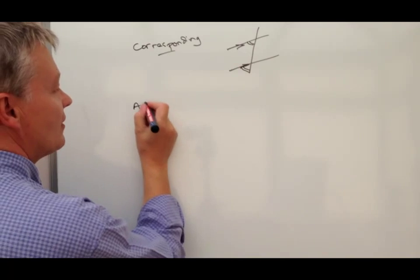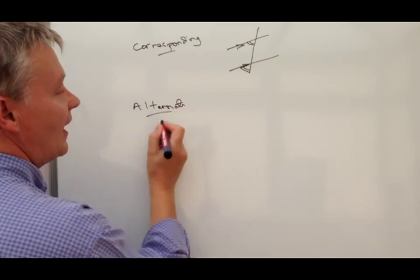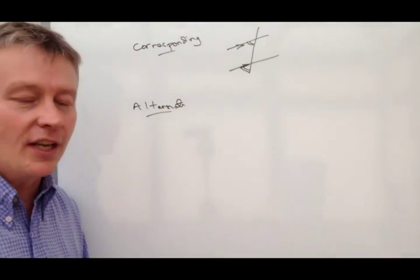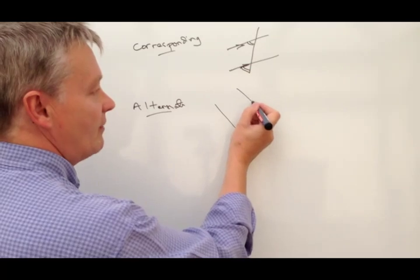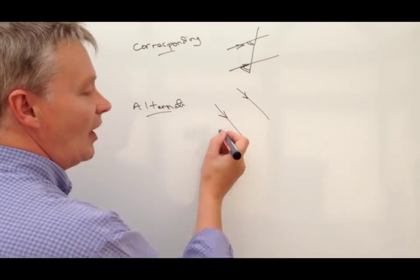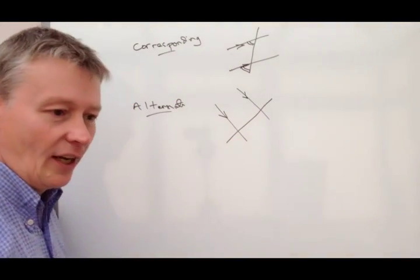The next one is alternate angles. And again, it deals with exactly the same idea of two parallel lines. So again, same train track, really. And those two parallel lines are crossed by a straight line.